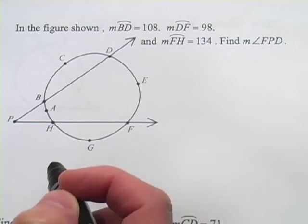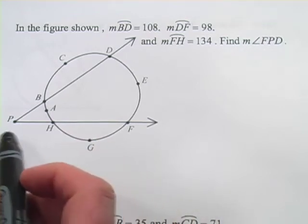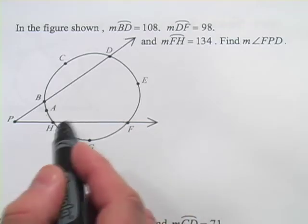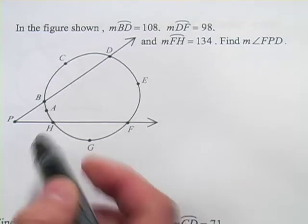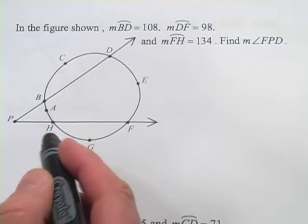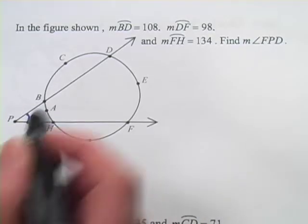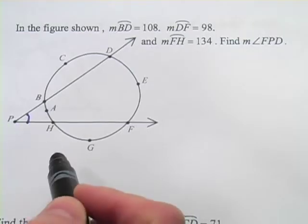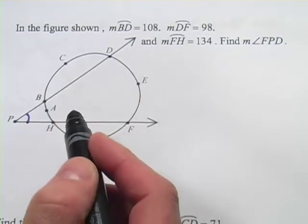In these problems, we're working with some of the relationships that happen when you have lines that cross a circle and intercept arcs. In this first one, we have a relationship that happens between the angle of two secant lines, the angle they form, and the arcs that get intercepted here.